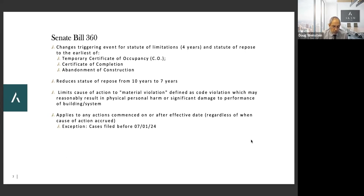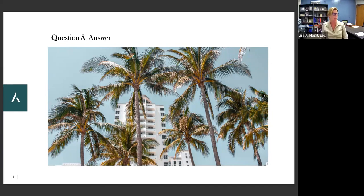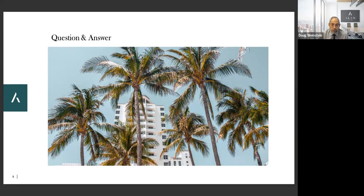Buildings undergoing developer turnover need to speak with their turnover attorneys and abide by the new statute of limitations. Q&A: regarding a property that is 26 years old and completes a milestone inspection early — you'll be on a 10-year schedule thereafter: 36, 46, 56 years, and so on. The local authorities will likely accept the report early, though there's no specific incentive for them not to.